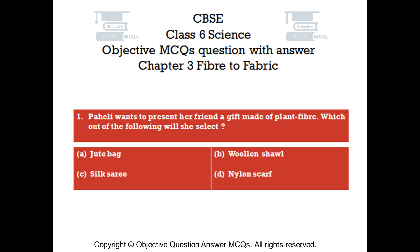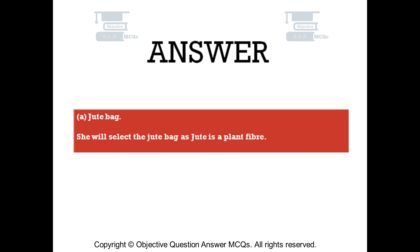Question number 1. Pahali wants to present her friend a gift made of plant fiber. Which out of the following will she select? Option A: jute bag. Option B: woolen shawl. Option C: silk sari. Option D: nylon scarf. The right answer is option A — jute bag. She will select the jute bag as jute is a plant fiber.